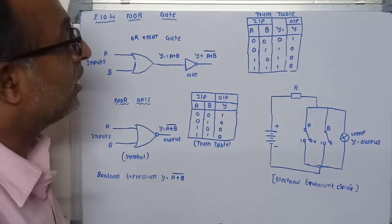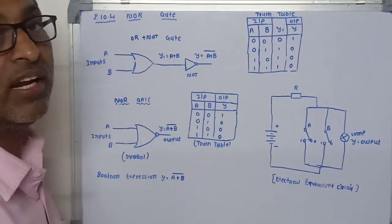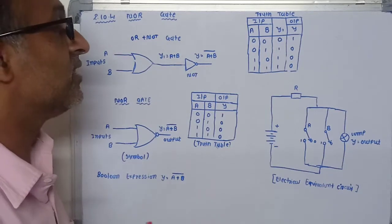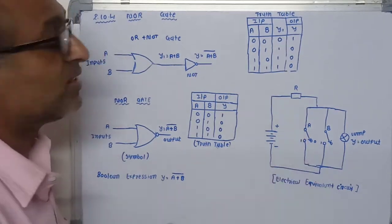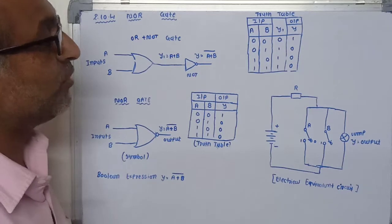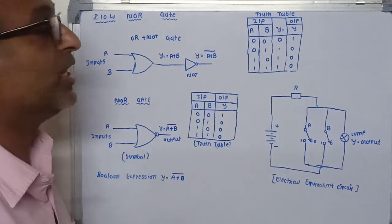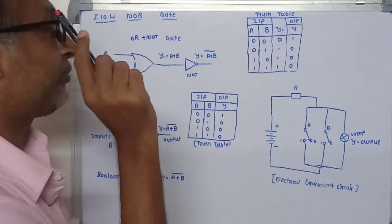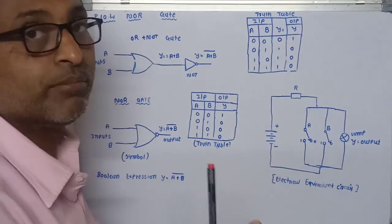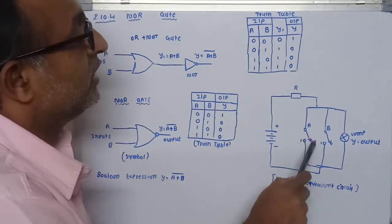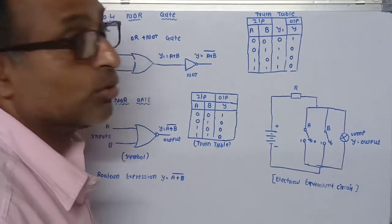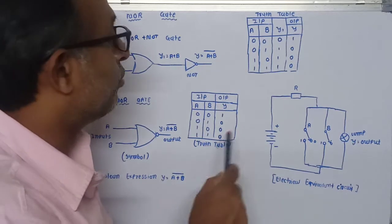Now we will see the electrical equivalent circuit of the NOR gate. In the previous case, two switches were connected in series. Here, two two-way switches are connected in parallel, and the lamp is also connected in parallel. So switch A, switch B, and the lamp are all connected in parallel, and this parallel combination is connected across the AC supply. When both switches are open — zero condition — there is no closed path, so current passes only through the lamp and it glows. When both inputs are zero, the lamp is ON.